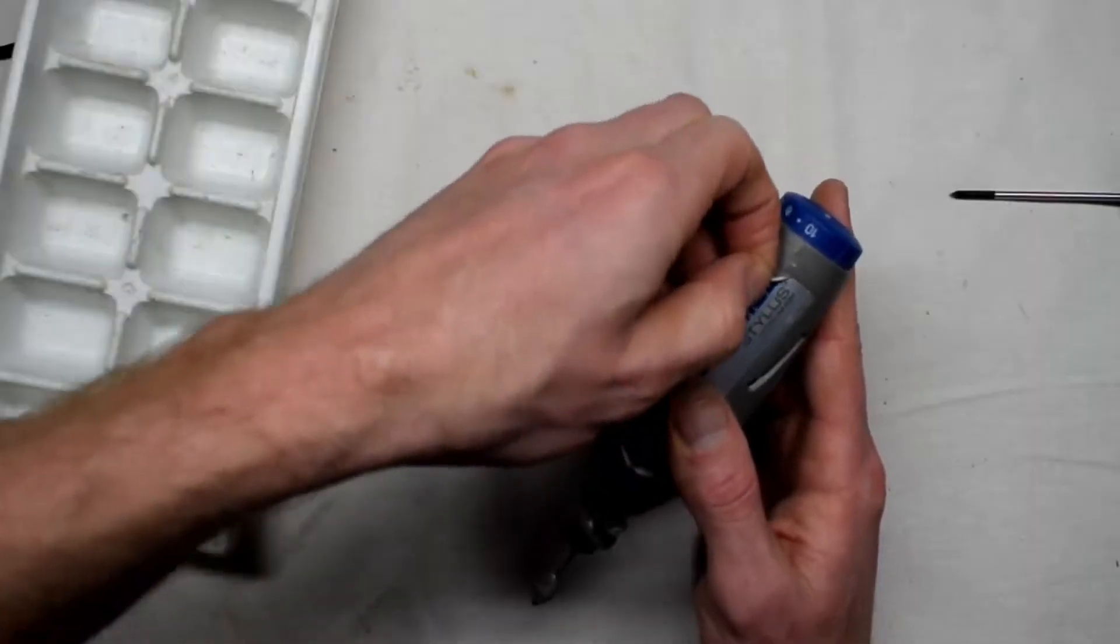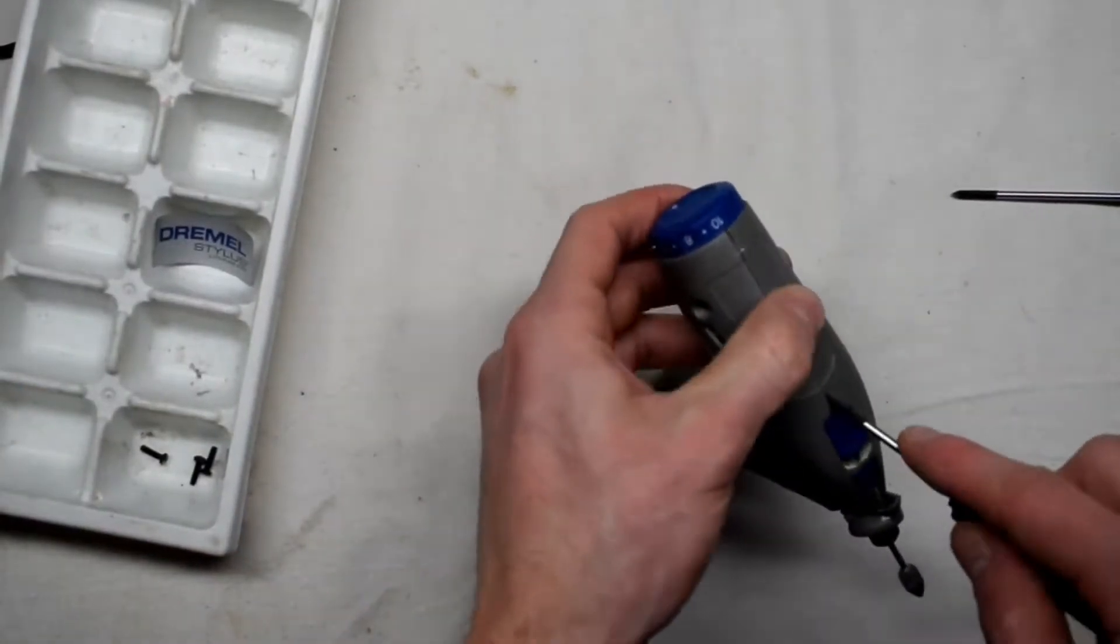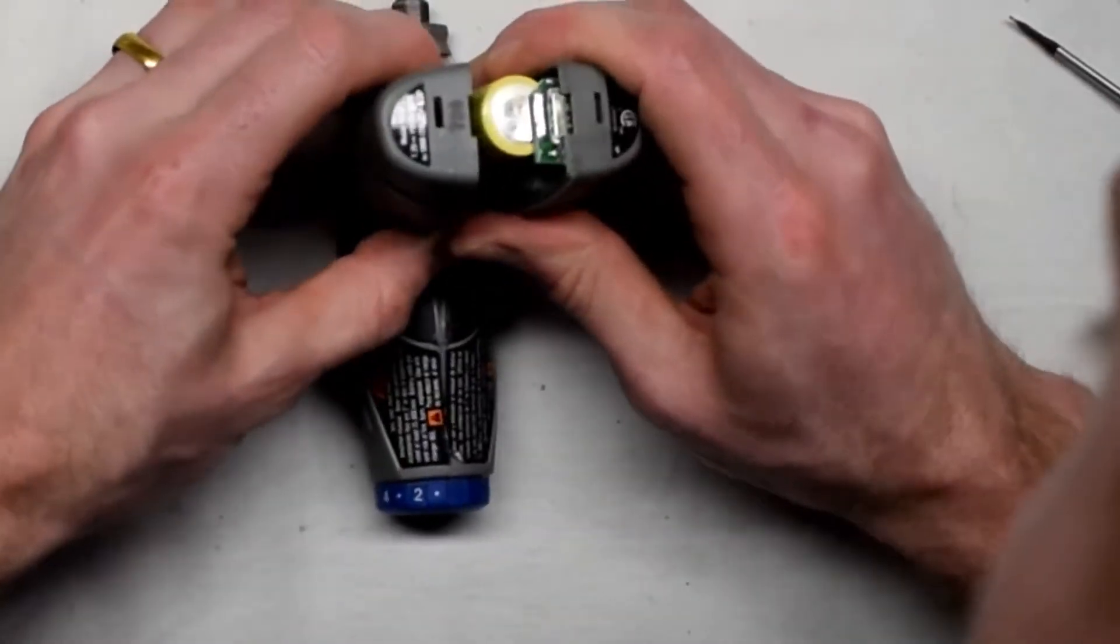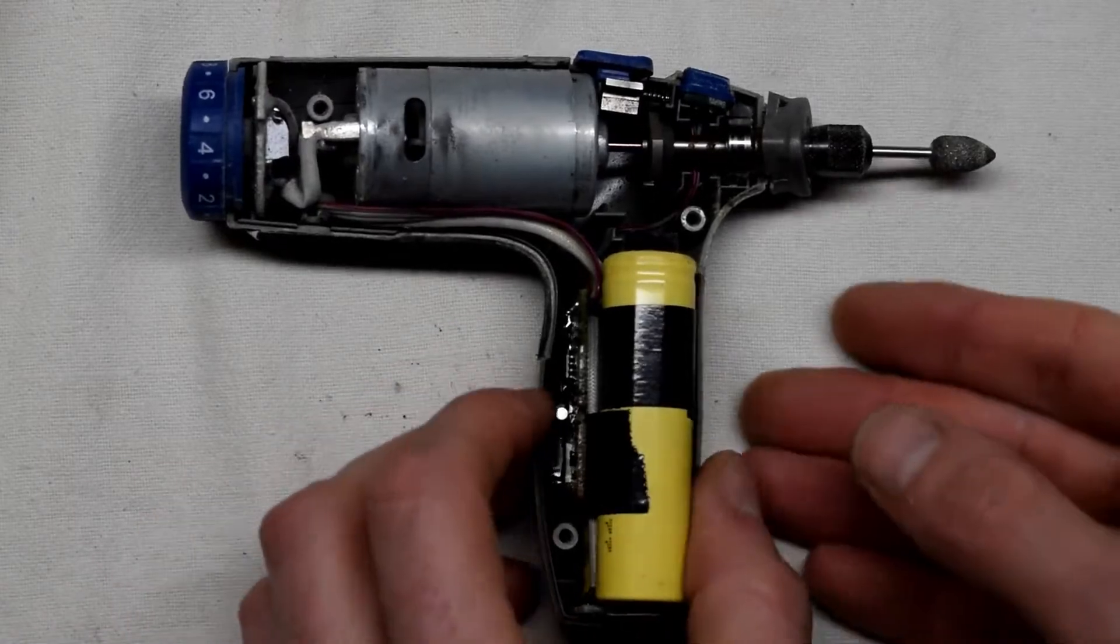And you can crack the model open. You can remove the sticker to save it. And there we go, here's the inside. You can see the yellow batteries.